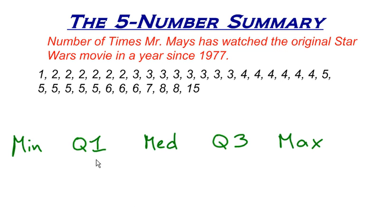The minimum, the first quartile, the median, the third quartile, and the maximum. By the way, the median is also called the second quartile.